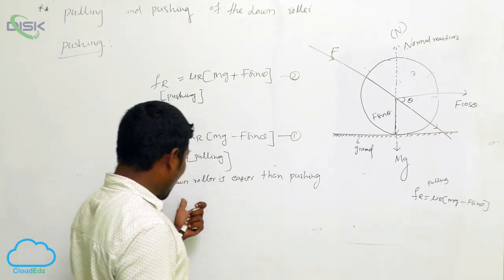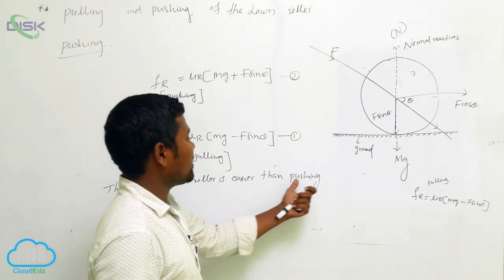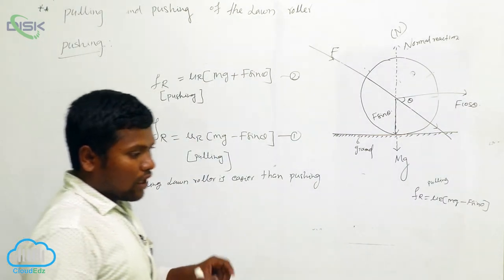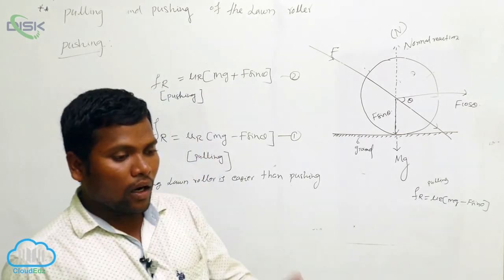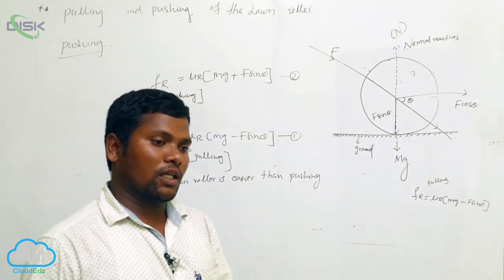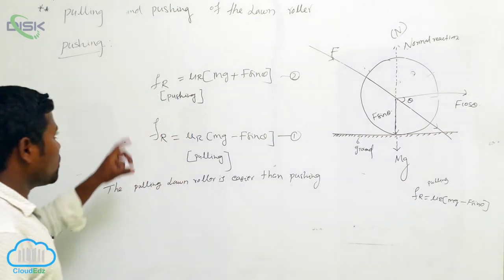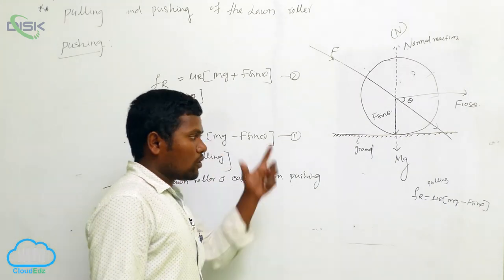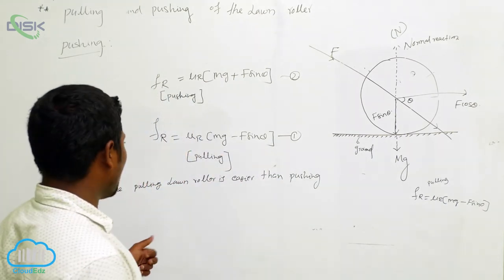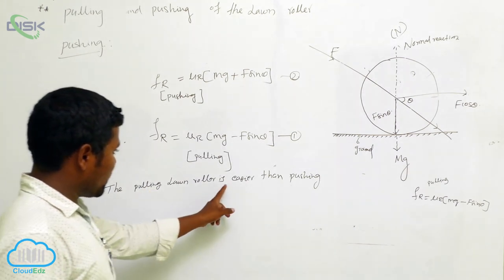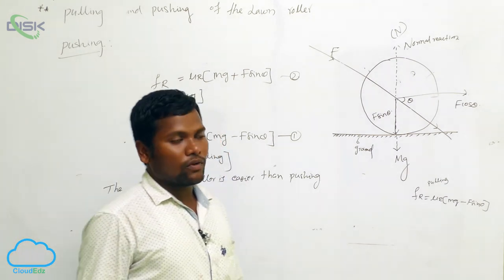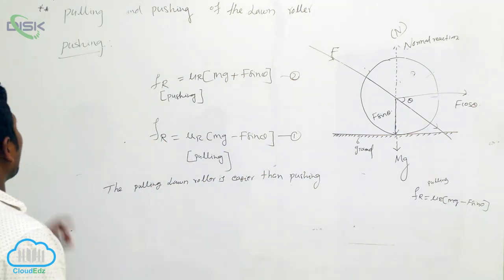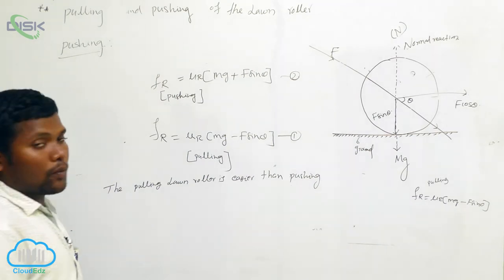So if you observe equations one and two carefully, the conclusion is: pulling the lawn roller is easier than pushing. In the exam, they will ask whether the lawn roller should be pulled or pushed for the best case. You have to derive the first case for pulling and the next case for pushing. From both equations we conclude that pulling is easier than pushing, because in the pulling case there is a negative sign whereas in pushing there is a positive sign. This is very important for the exam.